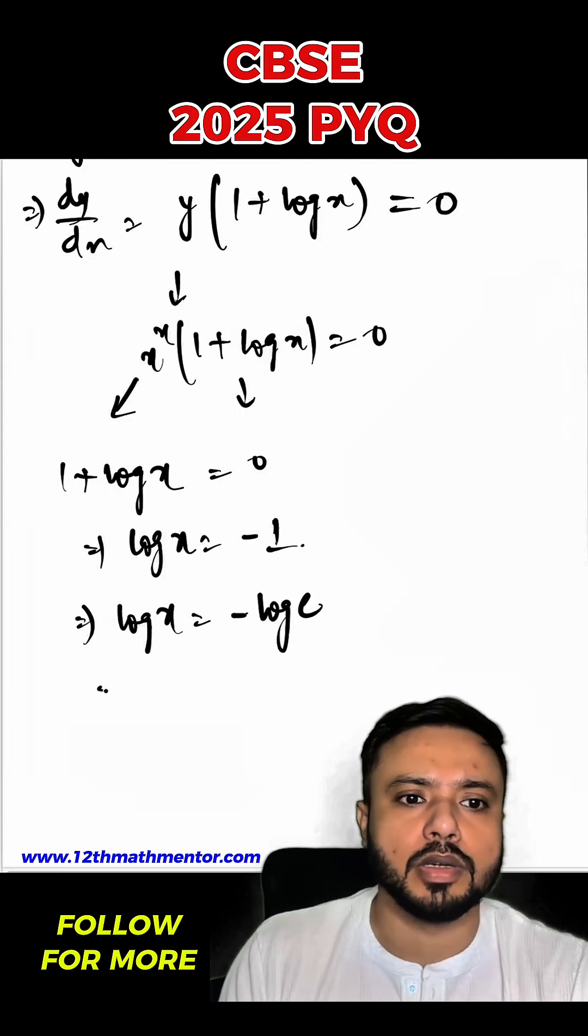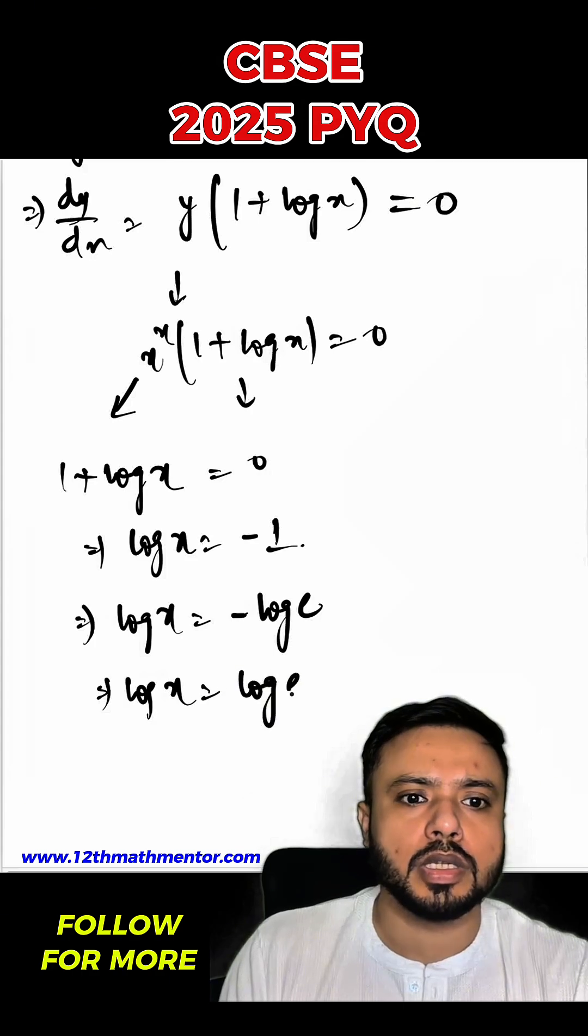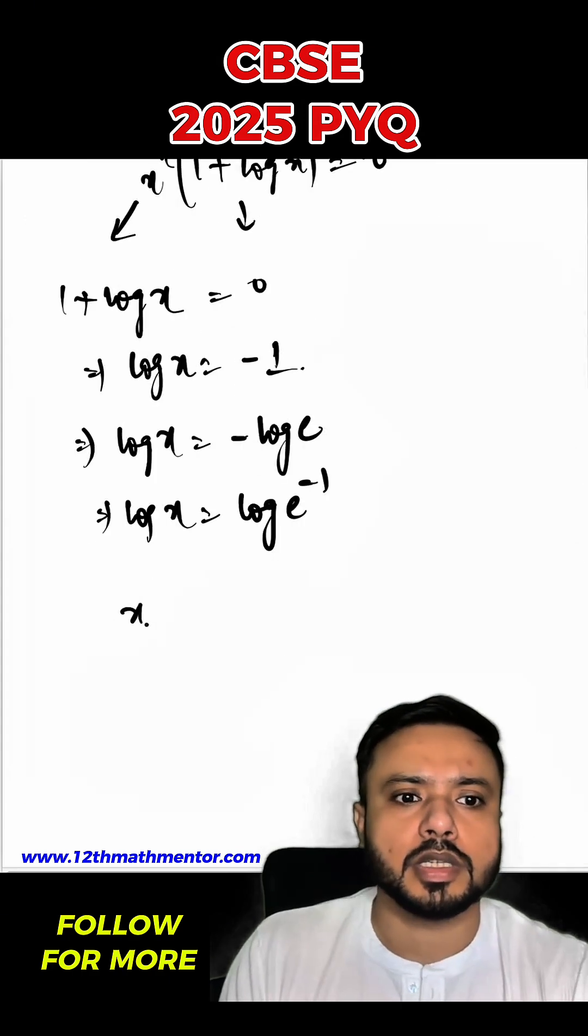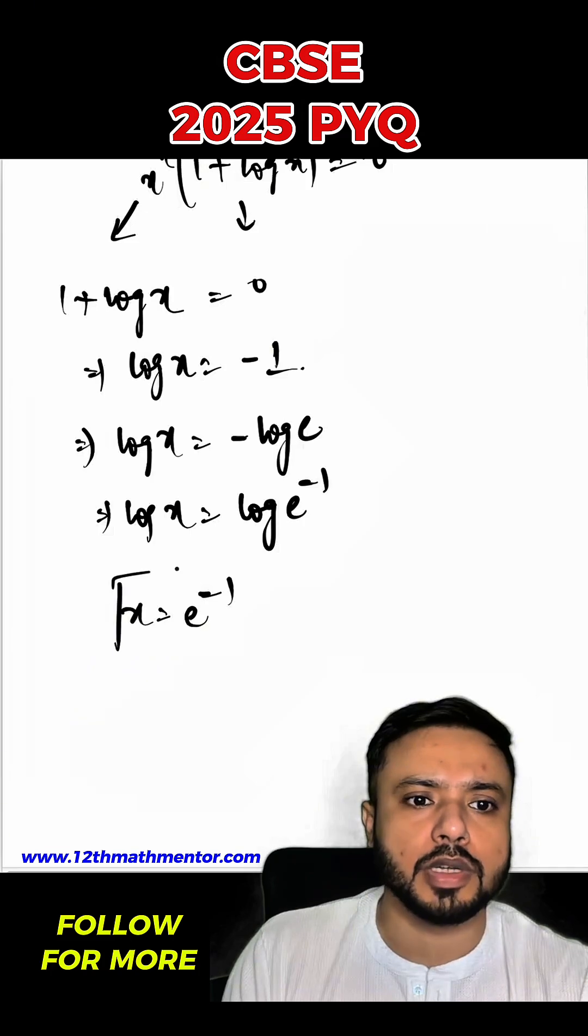So I can say that log x will be equal to log e raised to the power of minus 1. Hence x will be equal to e raised to the power minus 1. So option B is the correct answer for this question.